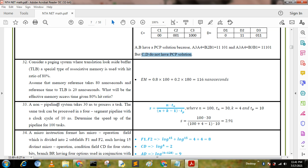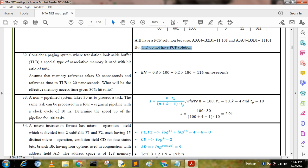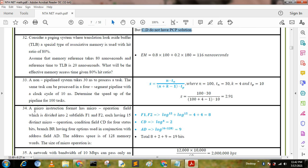Next question: A non-pipeline system takes 30 nanoseconds to process a task. The same task can be processed in a four-segment pipeline with a clock cycle of 10 nanoseconds. Determine the speedup of the pipeline for 100 tasks. From this formula: S = (n × tn) / ((n + k - 1) × tp), where n = 100, tn = 30, k = 4, and tp = 10. We put these values and get the answer: 2.91.